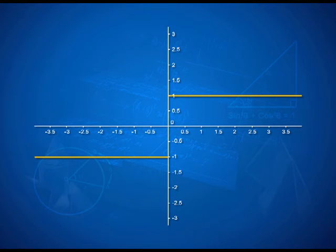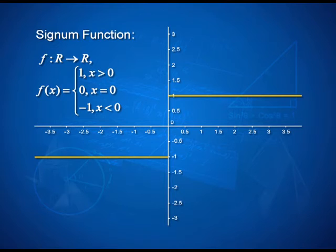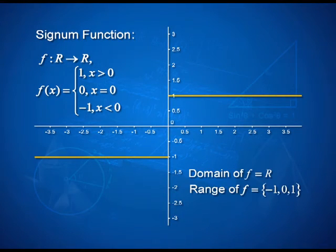Another very important function is the signum function, defined from real numbers to real numbers: f(x) = 1 when x > 0, f(x) = 0 when x = 0, and f(x) = −1 when x < 0. When plotted, it comes out in three parts by the definition. The domain is all real numbers and the range consists of three elements: {−1, 0, 1}.